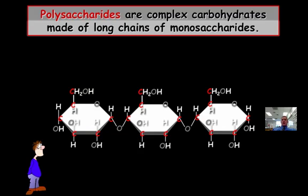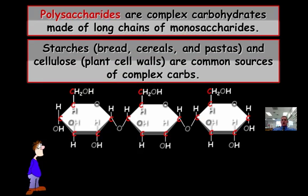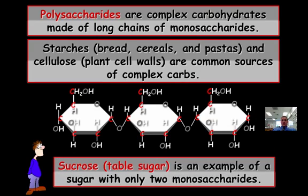So polysaccharides are complex carbohydrates. They're made up of long chains of monosaccharides. This happens to be three monosaccharides tied together. So poly meaning many, saccharide meaning sugar. So starches such as bread, cereals, and pastas, and also cellulose are common sources of complex carbs. Cellulose are what you find in the plant cell walls. And starches are like your potatoes. So these are your complex carbs. It's harder for your body to break these down. These are what you want to eat the night before you run a marathon. And sucrose is an example of a sugar with two monosaccharides. It's a little bit more complex than glucose, but it's a little least complex than a polysaccharide.